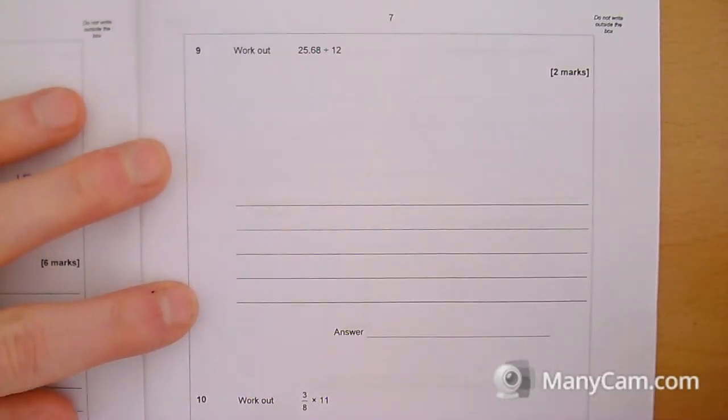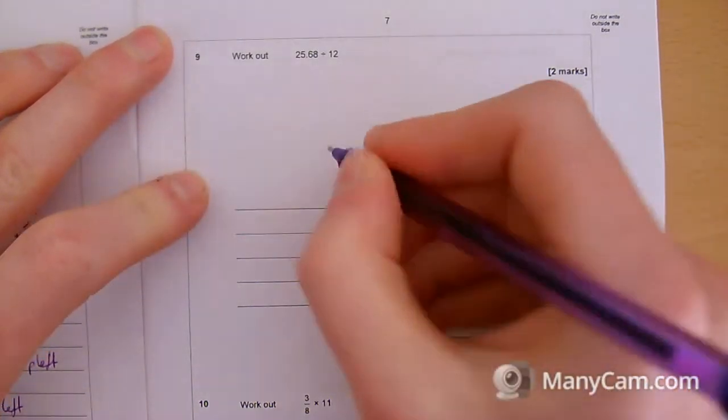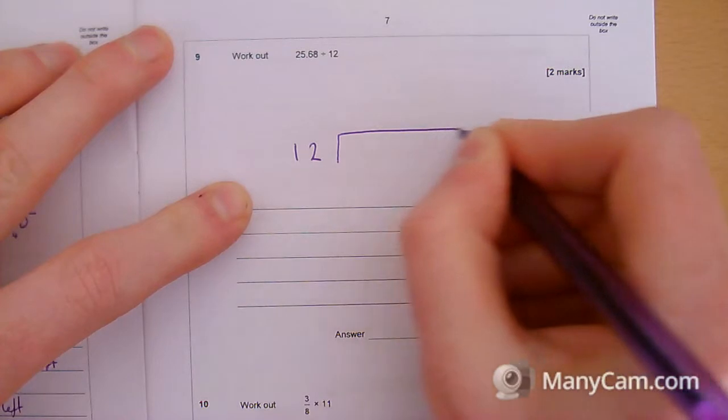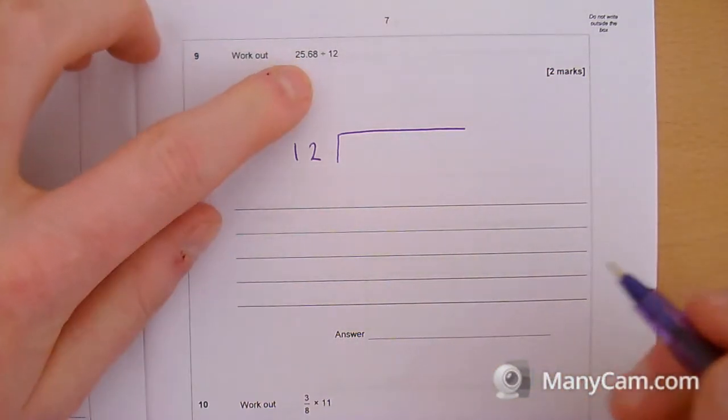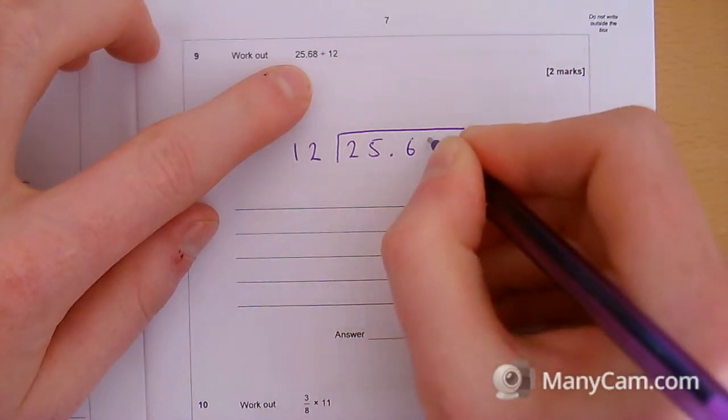Question 9 is worth 2 marks. It's just a division, testing your use of the bus stop method. What we're dividing by goes outside of the bus stop, and then inside the bus stop is what we're dividing, so 25.68.